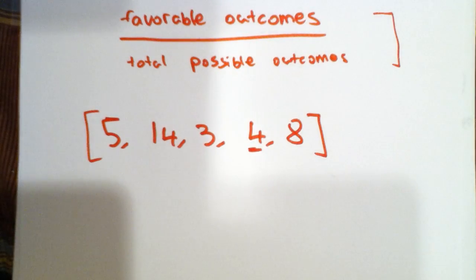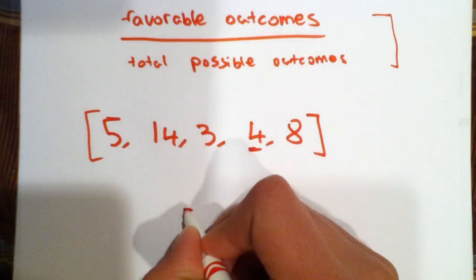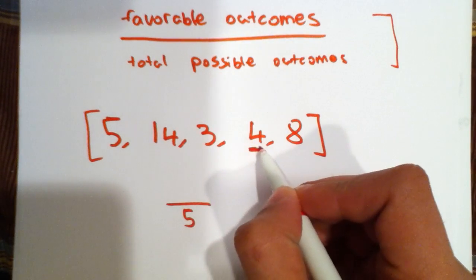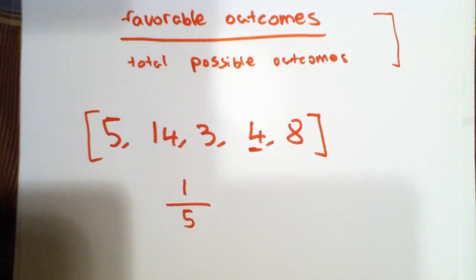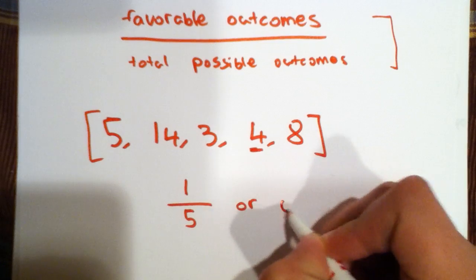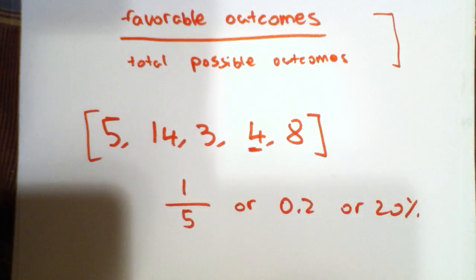So the total number of possible outcomes in this case is 5 since there are 5 numbers, and that would go on the bottom of a fraction and 4 is only one of the numbers. So our probability will be 1 fifth or 0.2 or 20%. These are just different ways of writing the same thing.